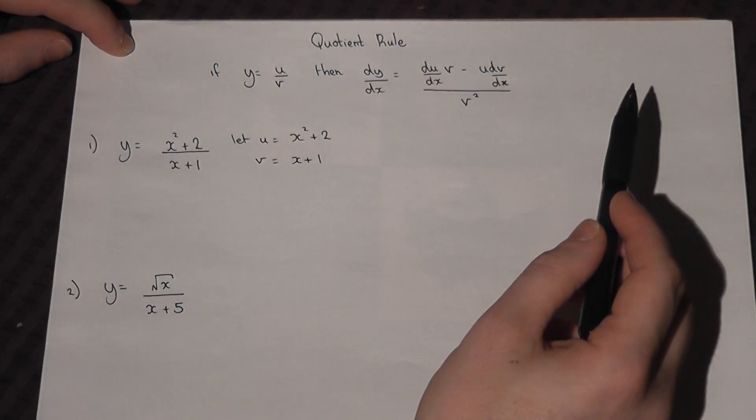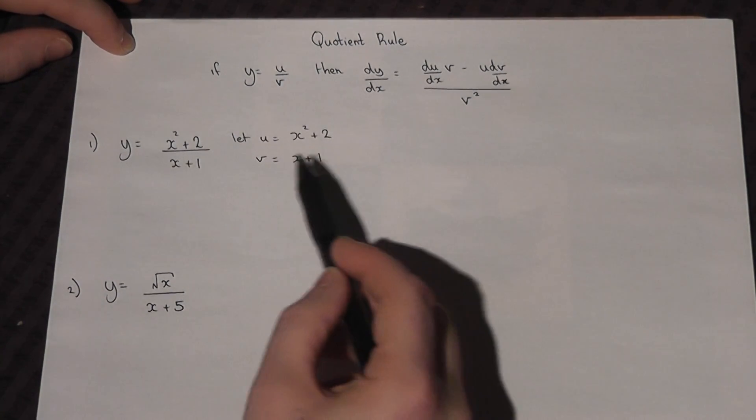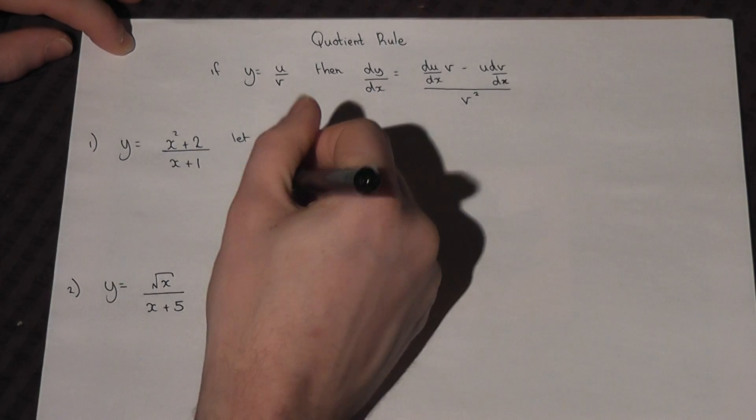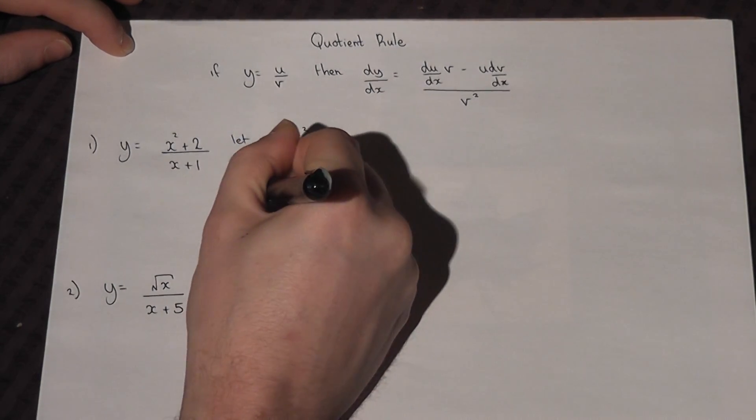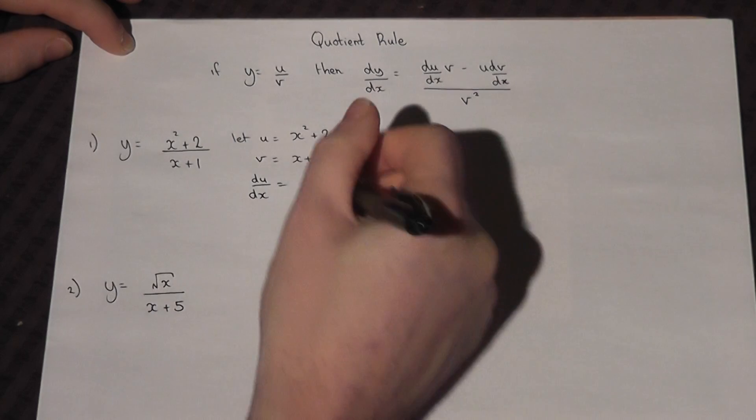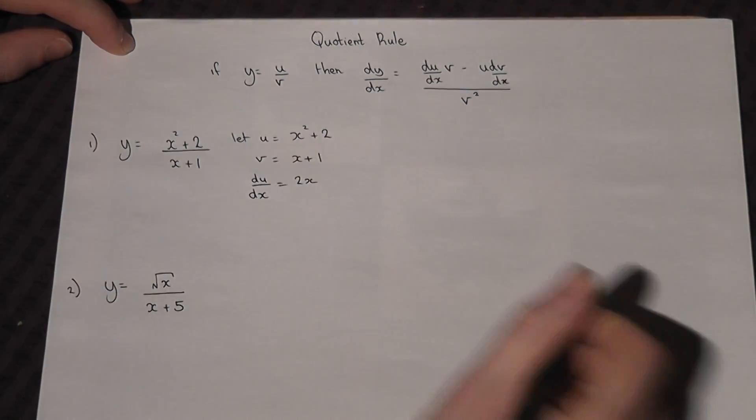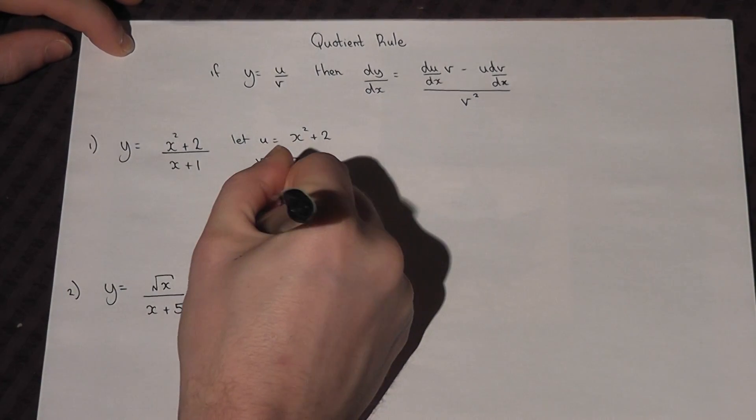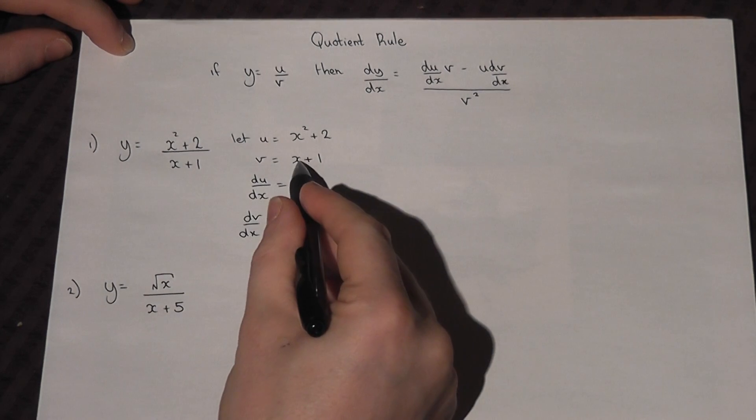To use the rule, we have to know what du by dx and dv by dx is. So du by dx will just equal 2x, and dv by dx will just equal 1.